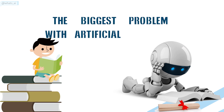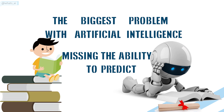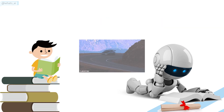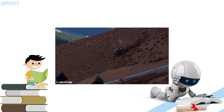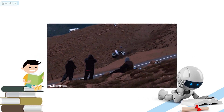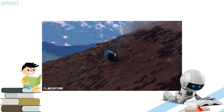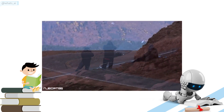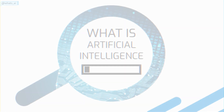One of the biggest problems with artificial intelligence is that it's missing the ability to predict what's going to happen in the world. If you train a system to drive a car, you don't want it to do stupid things like falling off a cliff over and over again, learning slowly by trial and error that it's not a good idea. This deep learning model may be a way to make machines learn more like us.